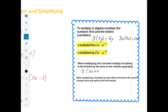When multiplying into a bracket, you multiply everything in the bracket by the term on the outside separately. So if I have 2 by 3x plus 7, I'm going to multiply 2 by the 3x and 2 by the 7, giving 6x plus 14. Nothing more I can do with that — I can't add them because they don't both have the same variable. So that's finished.